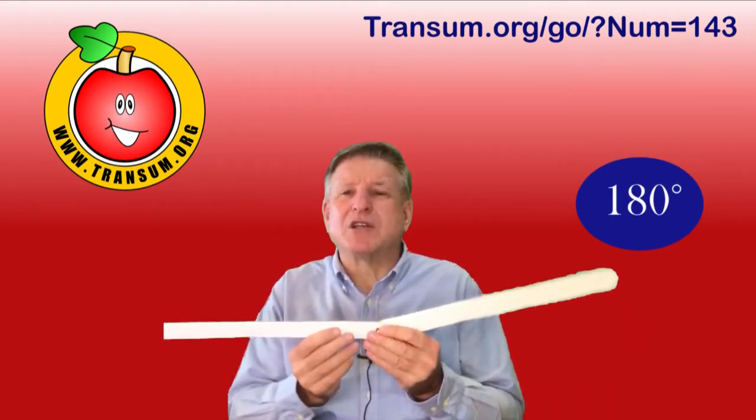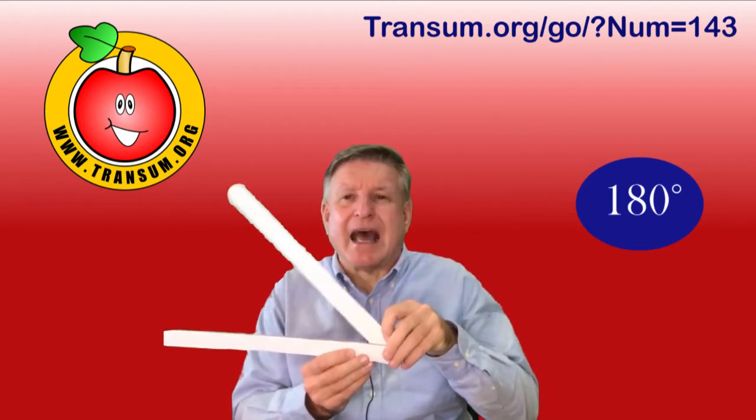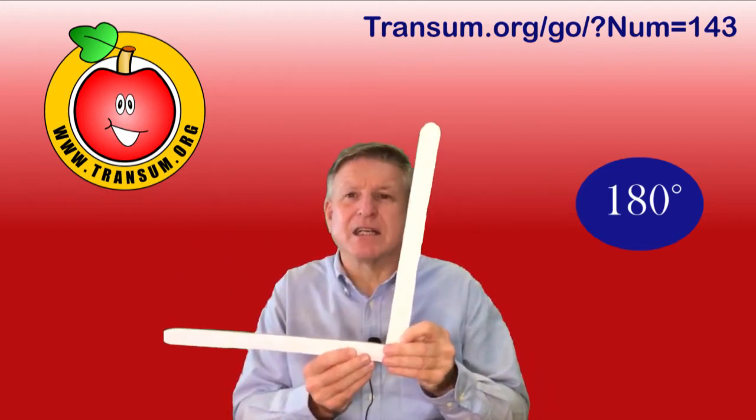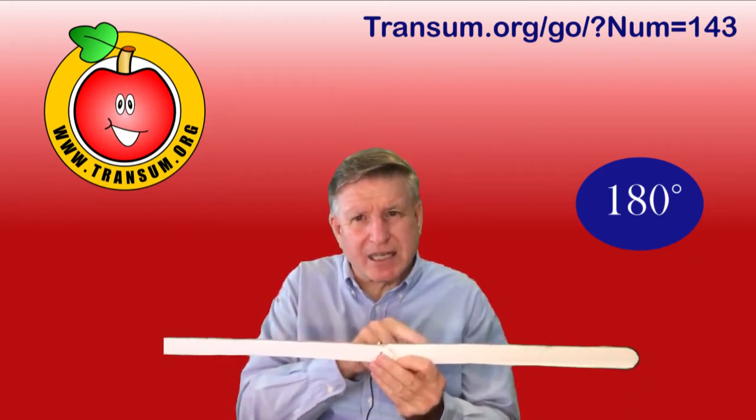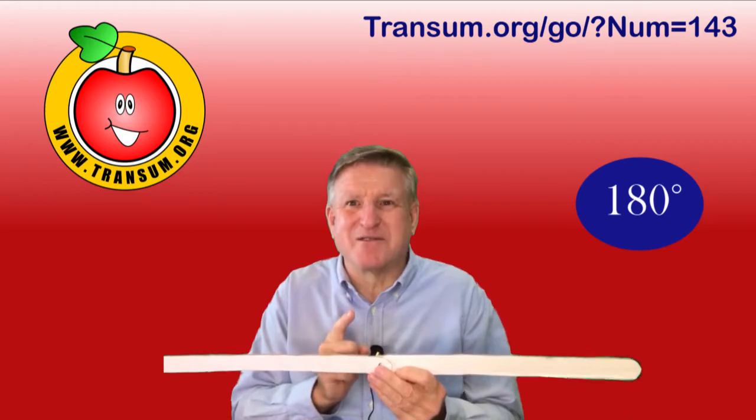Well, we measure angles in degrees, and a right angle is 90 degrees. A straight line is 180 degrees, and that's one thing you need to know.